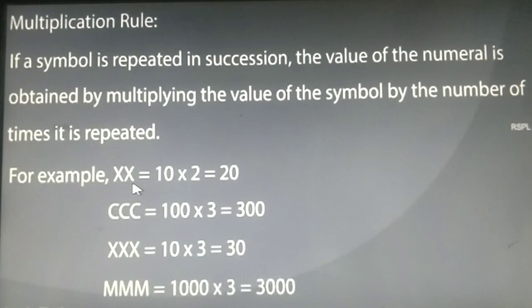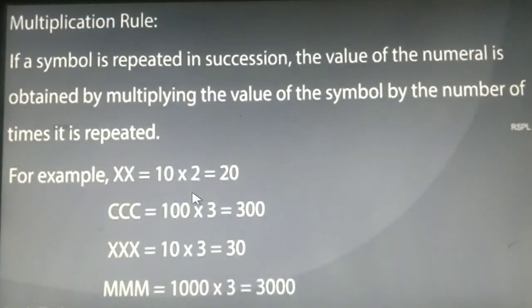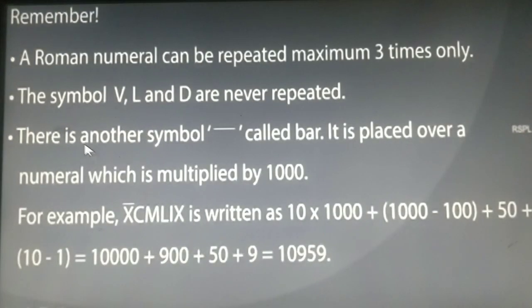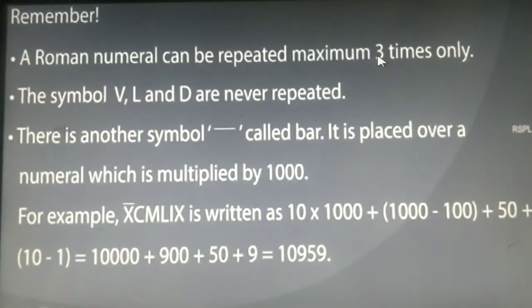For example, XX means 10 into 2, that is 20. Similarly, CCC means 100 into 3, that is 300. XXX in Roman numerals means 10 into 3, which is 30. And MMM (triple M) means 1000 into 3, that is 3000. A Roman numeral can be repeated a maximum of 3 times only. The symbols V, L, and D are never repeated.